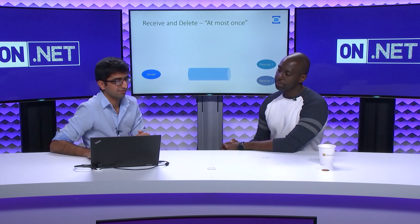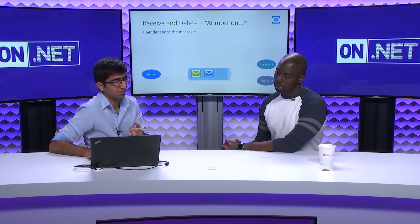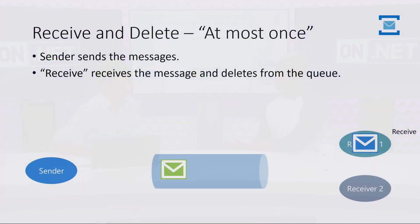The next option is receive and delete mode, where you don't send an acknowledgment and it's out of the hands of the Service Bus broker. The sender sends messages as expected, and the receiver simply calls receive — that takes the message off the queue and gives it to the receiver. The message responsibility now lies with the receiver. If the receiver crashes or has any issues, the message is gone.